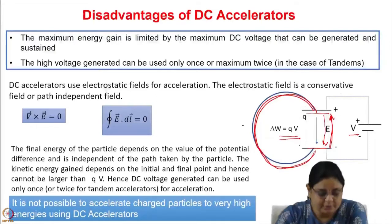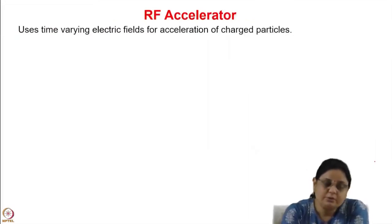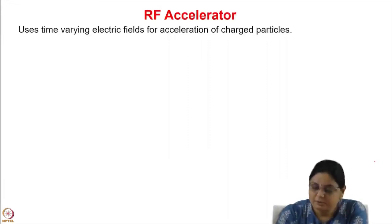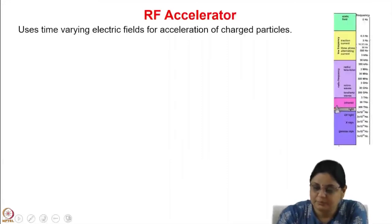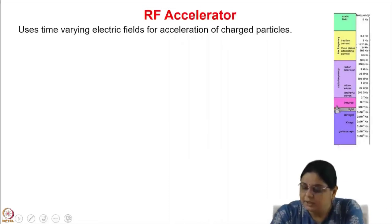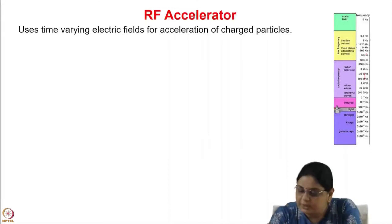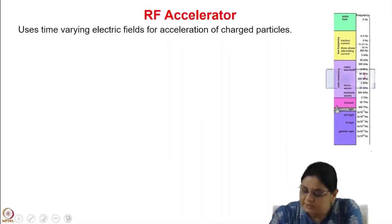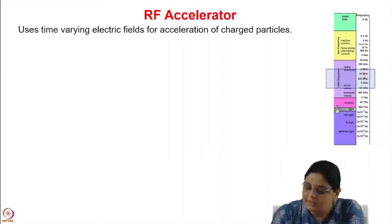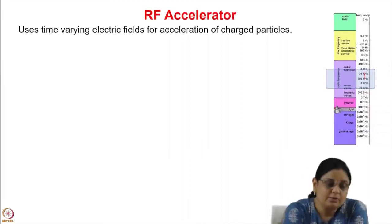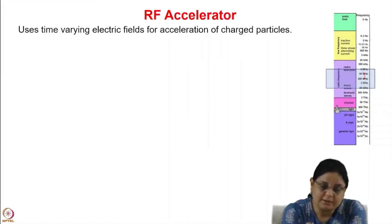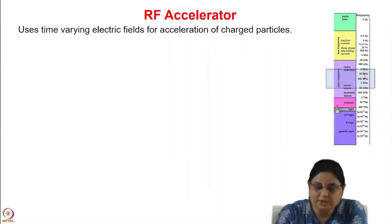It is not possible to accelerate charged particles to very high energies using DC accelerators. The solution is to use an RF accelerator, which uses time-varying electric fields for acceleration of charged particles. Looking at the electromagnetic spectrum, the frequencies used for acceleration typically range from a few megahertz to tens of gigahertz, which lies in the radio frequency region — that is why these are known as RF accelerators.